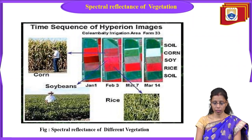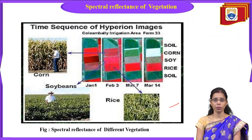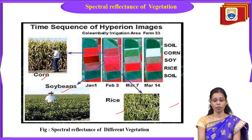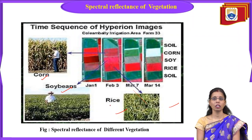Different types of vegetation on the earth's surface feature appear differently in satellite images. We have three types here: corn, soybean, and rice. Corn appears in dark red color, soybean appears in a lighter red color, and rice appears in a darker maroon red color. Based on the type of leaf, structure of the leaf, or water content in the leaf, the appearance in the image will differ, allowing differentiation of crop types.